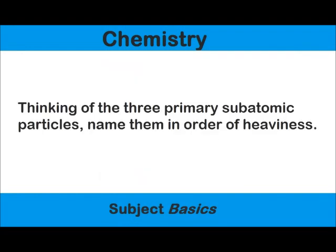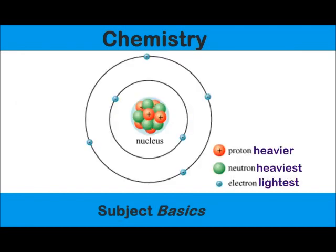Thinking of the three primary subatomic particles, can you name them in order of heaviness? If you guessed electrons as the lightest, protons as being heavy, and neutrons as the heaviest, then you're correct.